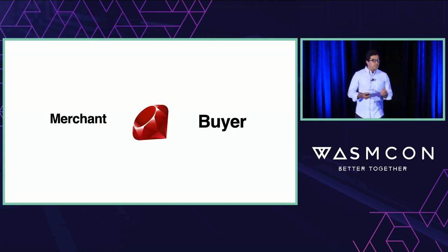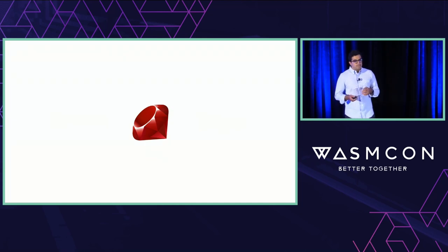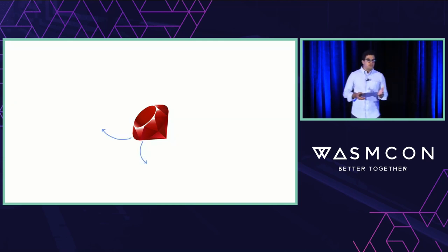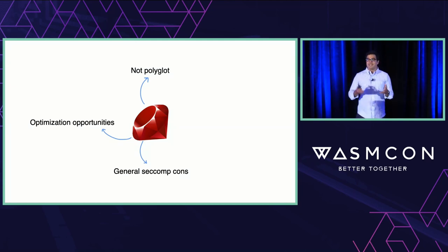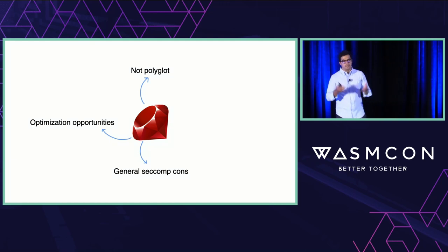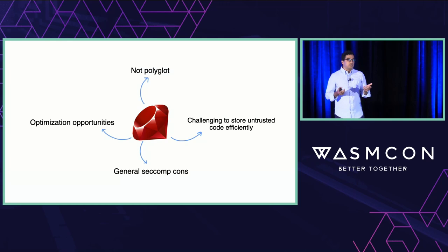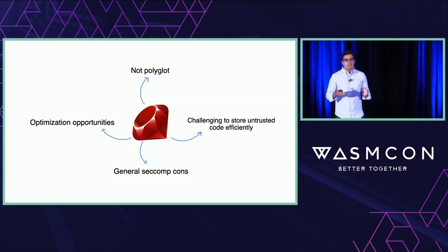This solution solved a particular business problem — it worked and was designed with the tools available at the time. But questions arose about scalability. Several cons emerged over time: optimization opportunities were tied to the Ruby VM itself; there were general SecComp drawbacks; the solution was not polyglot, meaning you were locked into Ruby — supporting another language like JavaScript would mean adopting a new engine like V8 or SpiderMonkey; and storing untrusted code efficiently was a challenge, since depending on the language chosen, source code storage could waste space.